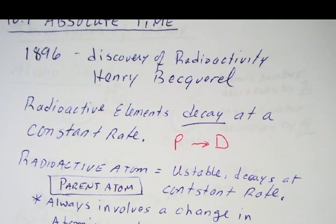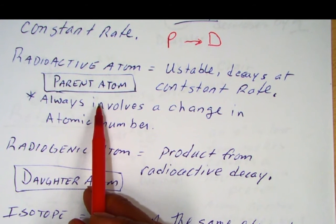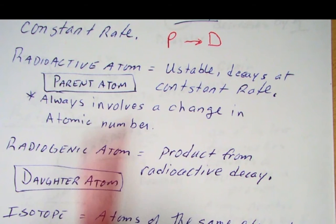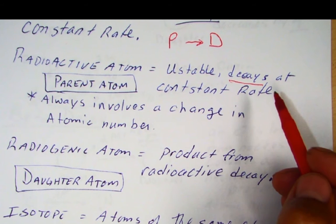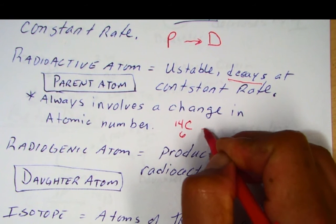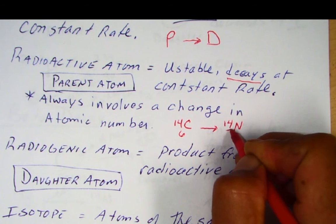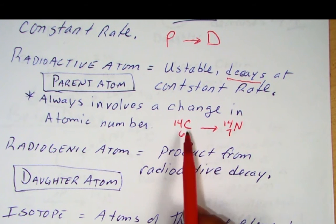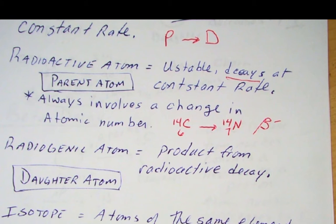We measure the parent and the daughter atoms in the rock or the mineral. Now a radioactive atom, the parent atom, is unstable. It decays at a constant rate. And so this decay always involves a change in the atomic number. For example, carbon-14 has atomic number 6, and it will decay to nitrogen-14, which has atomic number of 7. So there's a change in the number of protons. So the key thing about radioactivity is the protons, the number of protons change. In this case, they increase by 1. This type of decay is known as beta decay.